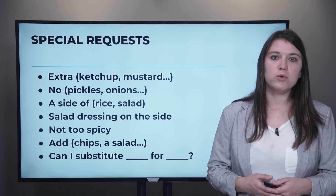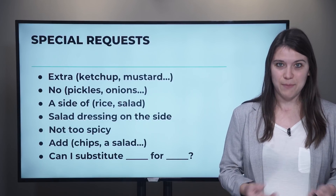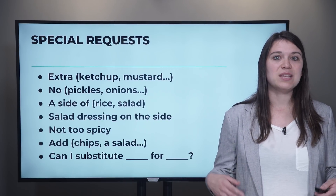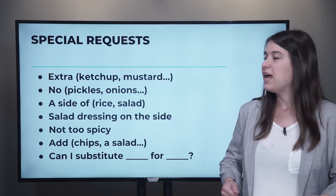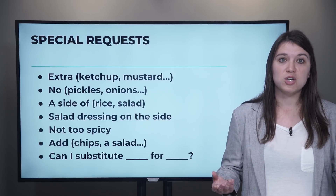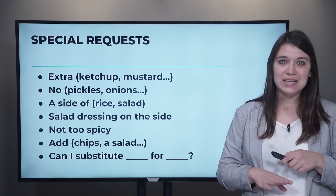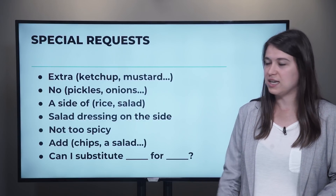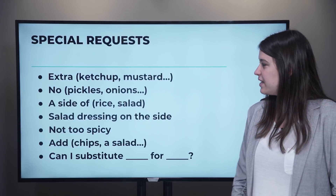When you order your food, there are some special requests that you might want to make. Keep in mind, if you want extra something, this is something that already comes with your meal but you want more of it. So if you order a burger and you want extra ketchup or extra mustard, it means you want more than is already given. And if you want something left off of your meal because you don't like it or you're allergic, you can say 'no pickles,' 'no onions,' 'no pineapple,' things like that.